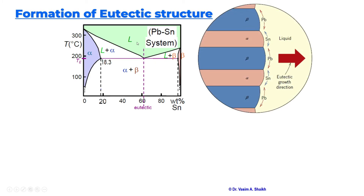Just below the eutectic point, the liquid is transforming into the lamellar phase. Since the alpha phase is rich in lead, all the lead in the liquid phase will move towards alpha. Similarly, all the tin in the liquid phase will move towards the beta phase. This is the redistribution that is happening as the liquid forms solid — the redistribution of lead and tin as shown in the figure.